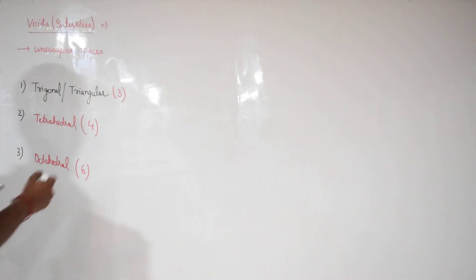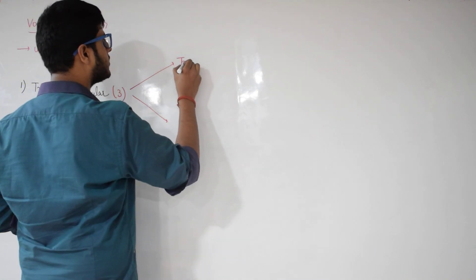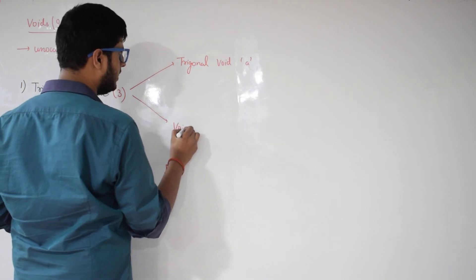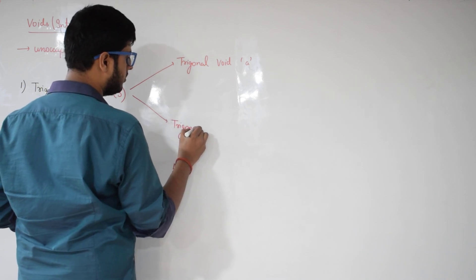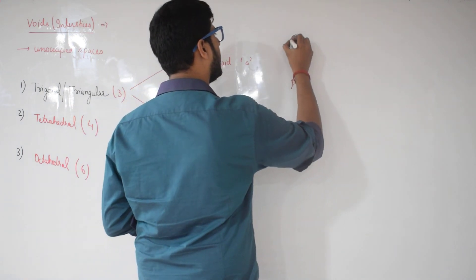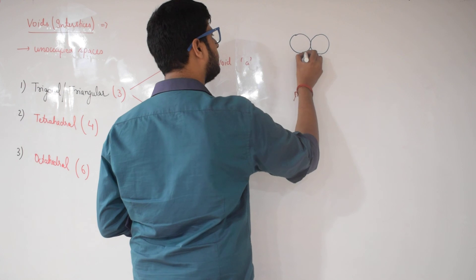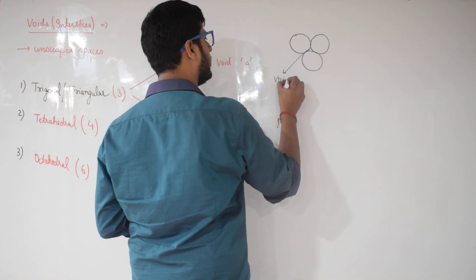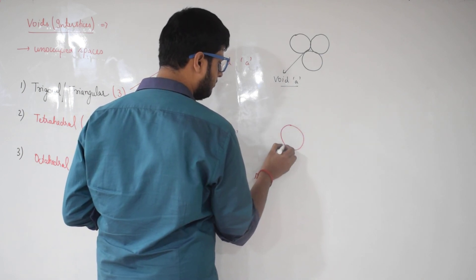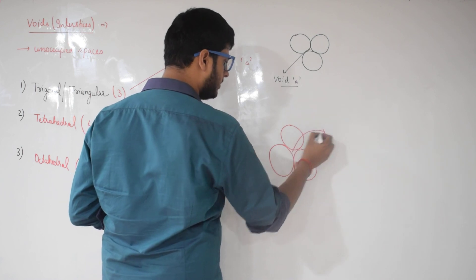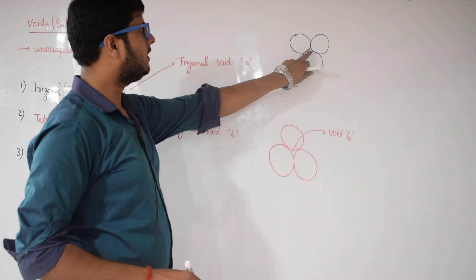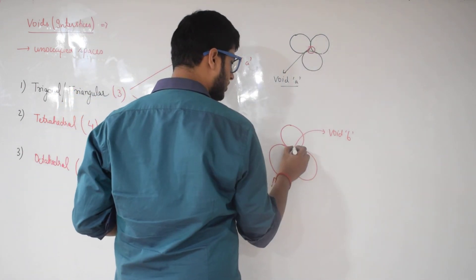Trigonal voids can be of two types: void A and void B. In trigonal void A, the arrangement has 2 particles above and 1 particle below — the space in between is void A. In void B, the arrangement is 1 particle above and 2 particles below — the empty space formed is void B. This particular position is void A and this particular empty space is void B.